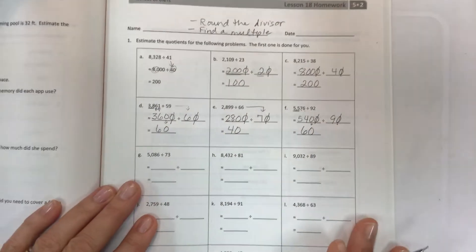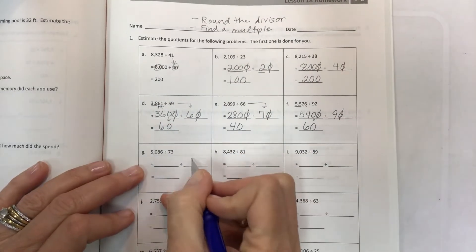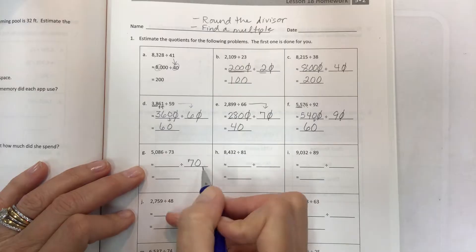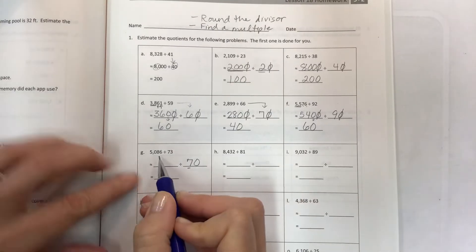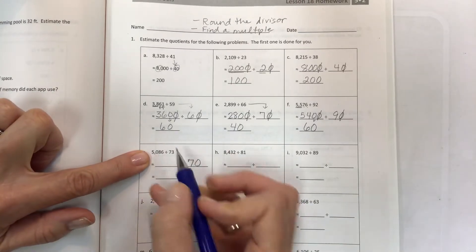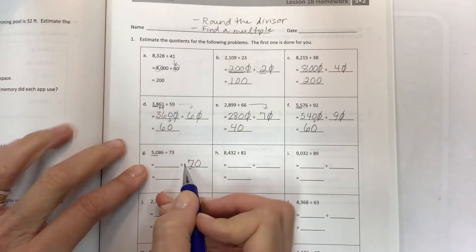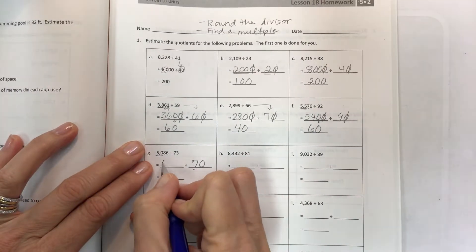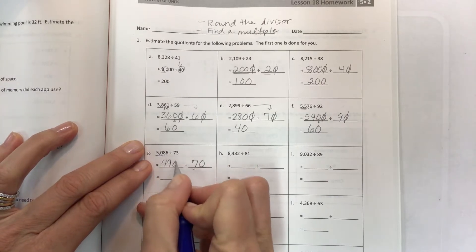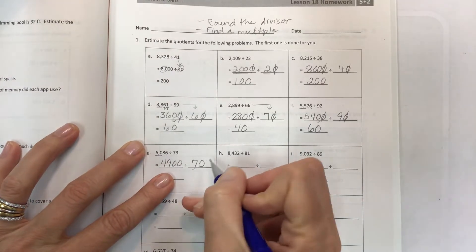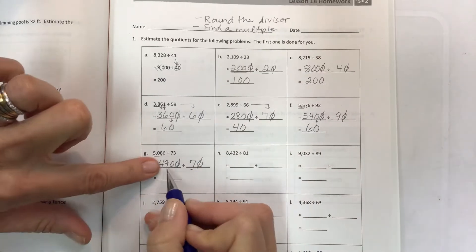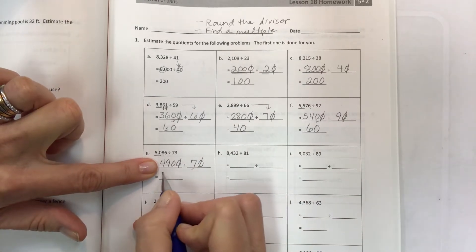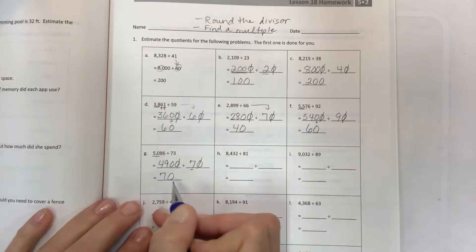Next one - round the divisor first to 70. Find a multiple of 7 that's close to 50, and hopefully you know that 7 times 7 is 49, so we're going to use 49 and then the other two digits. Find your offsetting zeros - 1, 2. 49 divided by 7 is 7 and the other one comes down.